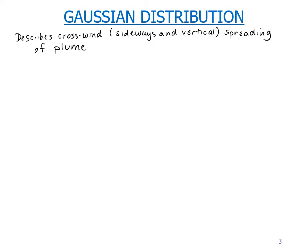The Gaussian or normal distribution is used to describe how the concentrations vary in space and it describes the crosswind spreading of the plume in the sideways direction and in the vertical direction.